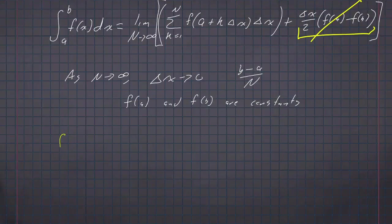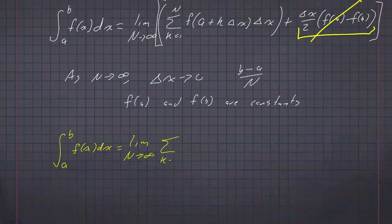So simplifying, we can say that the integral from a to b of f of x dx is simply the limit as n goes to infinity of the sum, k goes from 1 to n, of f of a plus k delta x times delta x.